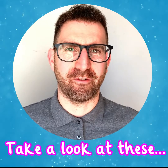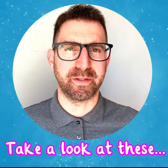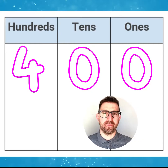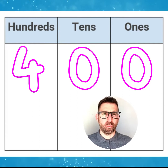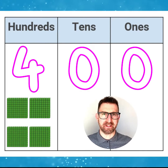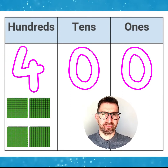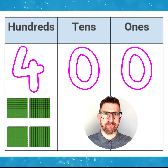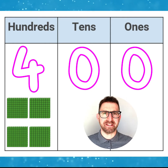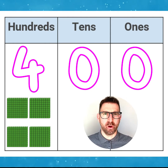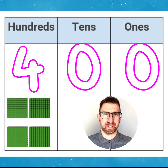Let's look more at a variety of numbers using base 10. Here we have the number 400. We would need 4 hundred flats to make this number and they would go into the 100's place value column. As there are no 10's or 1's, we would need to include the 0 placeholder when writing 400 to hold its value.